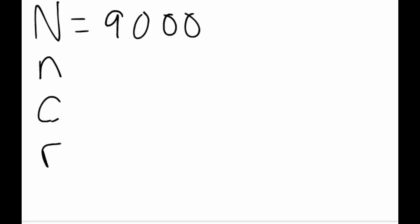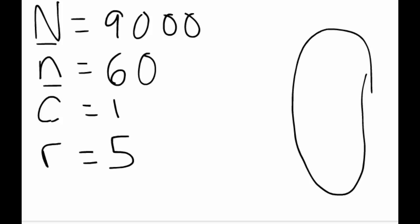Let's say we have an acceptance plan that has a big N of 9,000, a little n of 60, and let's say C and R are 1 and 5, respectively. So we have two terms here that should be familiar to you. What does the capital N represent? You guessed it right, that is the lot. So we have a lot of 9,000 units, whereas the little n is 60. So we're going to take a sample of 60 out of this lot of 9,000.